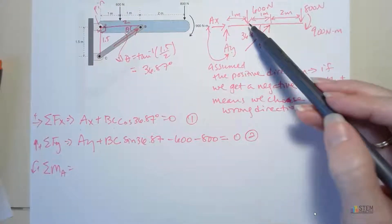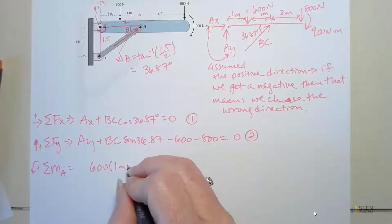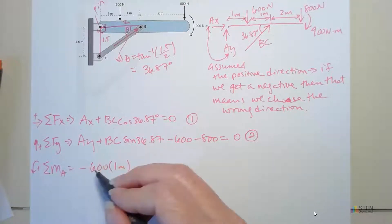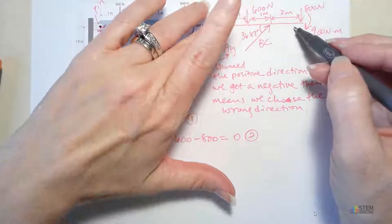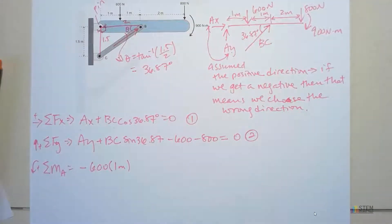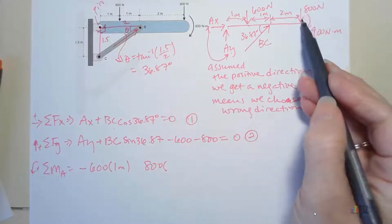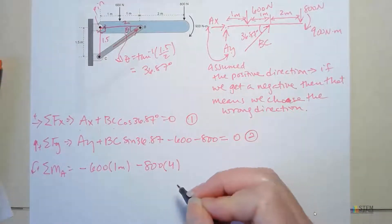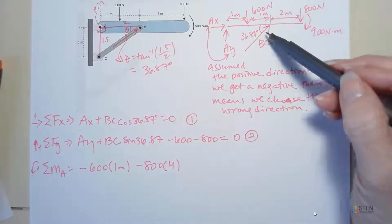Now let's start with the 600 newton force first. So that one's pointing down. And the distance to move this over to A is one meter. Is that positive or negative? It's going to be negative because it's clockwise. If this thing were free to rotate, if you held that in place right there at A, this force would push it this way, which is clockwise. Now let's look at 800. Force is 800. The distance, we need to go from here all the way over to here. That's 2 plus 1 plus 1, which is 4. That's negative also because it's clockwise rotation.